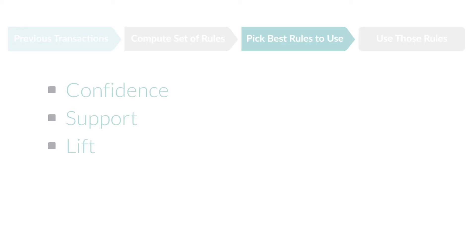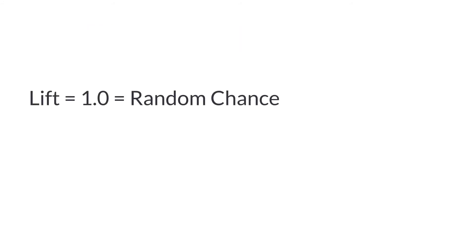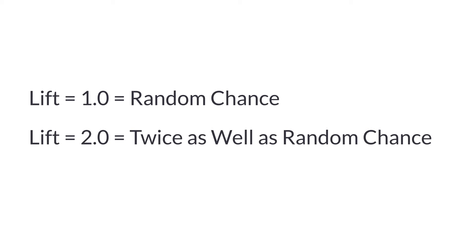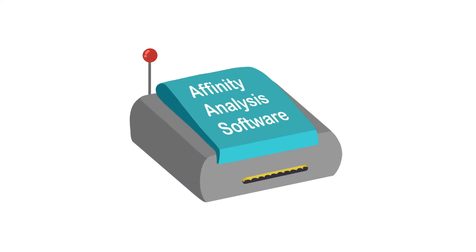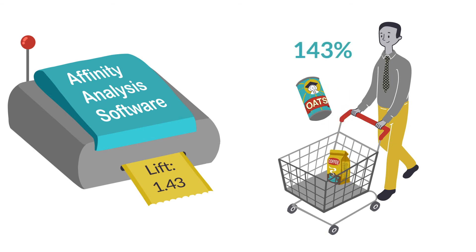We've covered confidence and support. The final measure is lift — a measure of how well the rule performs overall. A lift of 1.0 means the rule performs exactly the same as random chance. A lift of 2.0 means a rule performs twice as well as random chance. Our software calculates lift for us as well. For example, if a particular rule performs 1.43 times better than random chance, it means a customer who already has coffee in the cart is 143% more likely to add oatmeal. The bigger the lift number, the stronger the association.